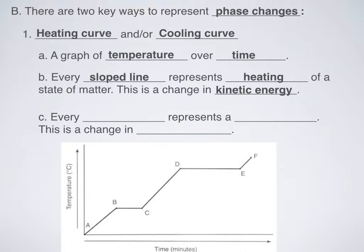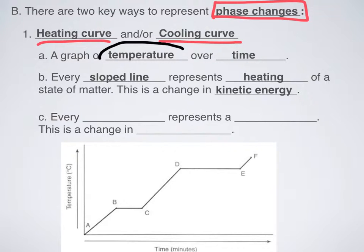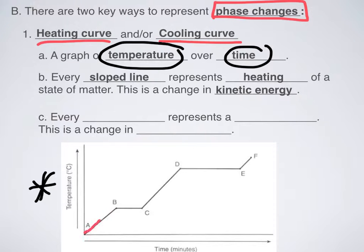How do we represent phase changes? There are two ways, and one is what we're going to talk about right now — that's called a heating curve or a cooling curve, depending on which side we're looking at. The first thing to recognize is that it always is a graph of temperature over time. I have temperature on the y-axis and time in minutes on the x-axis. In a perfect world, you'd get a shape that slopes up, then flatlines, then another slope, then flatlines, then another slope.